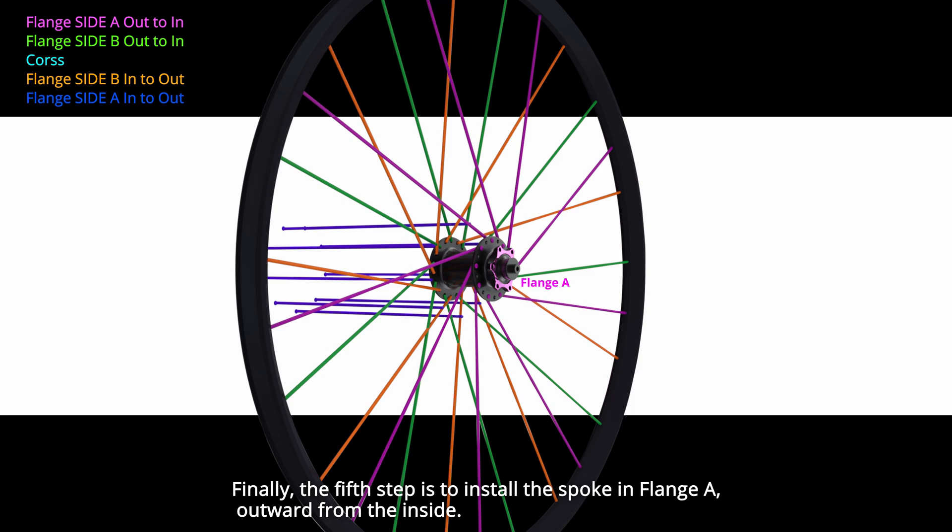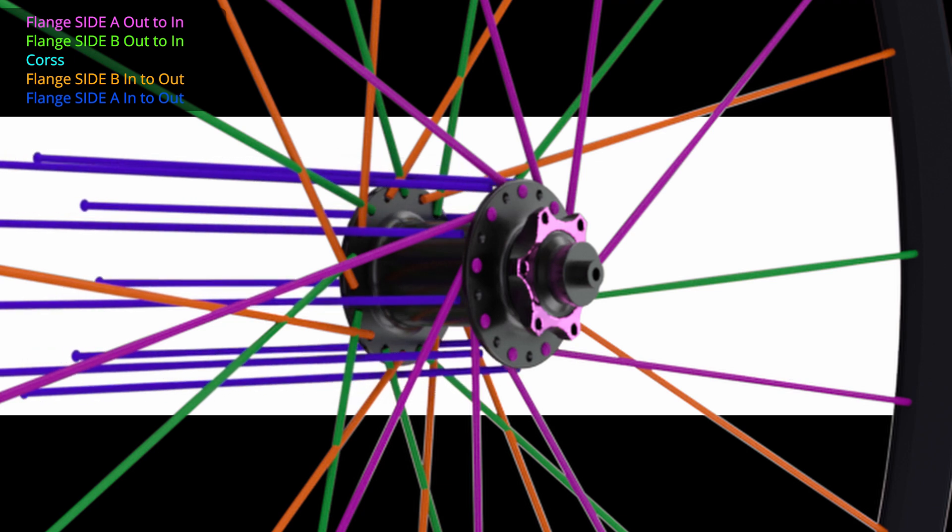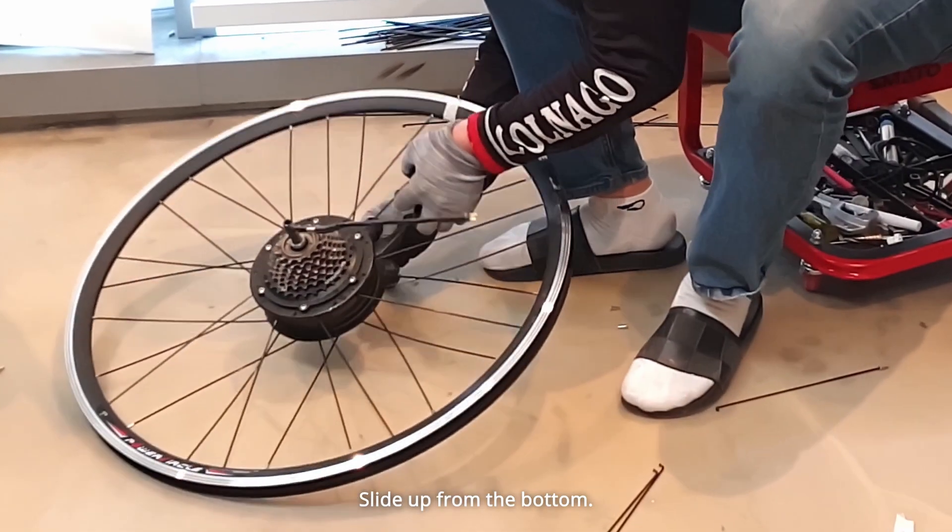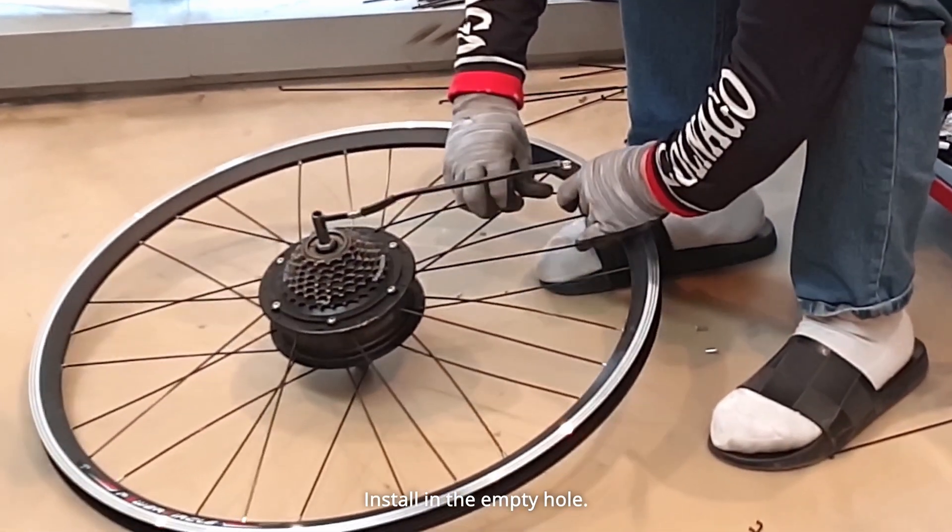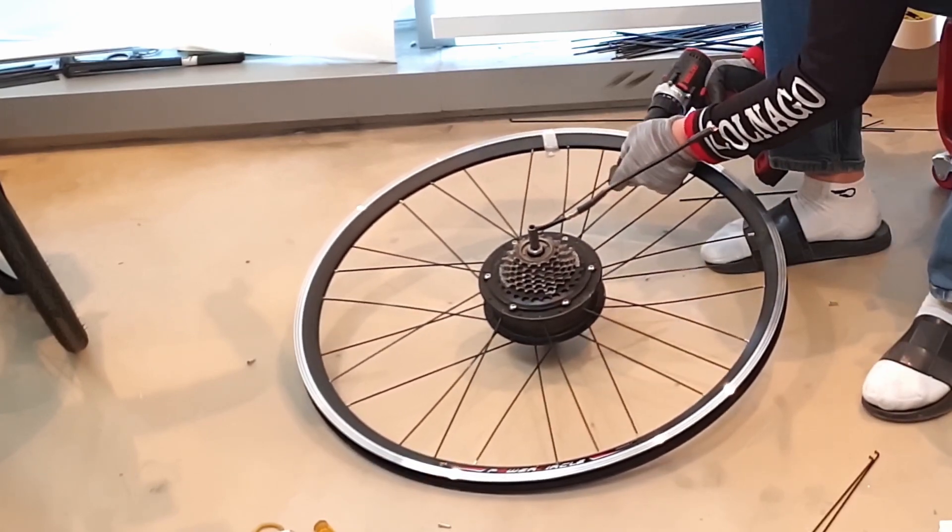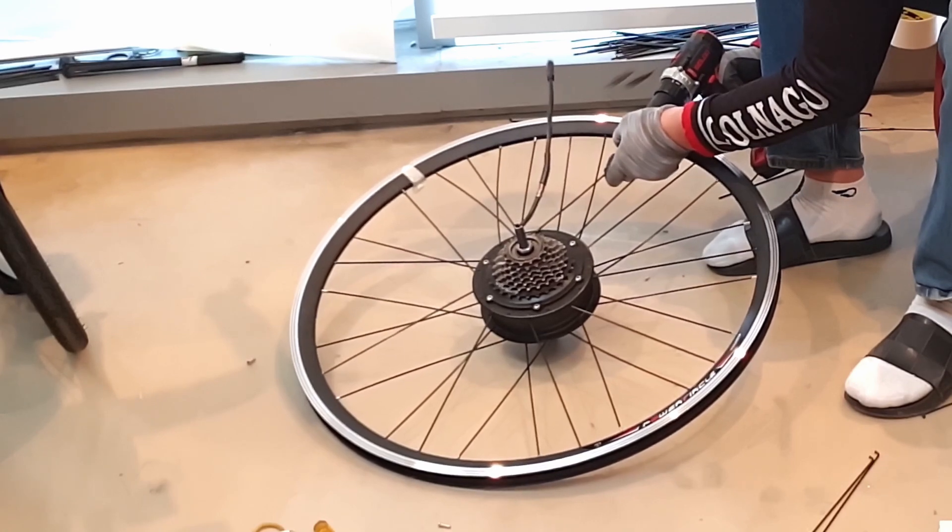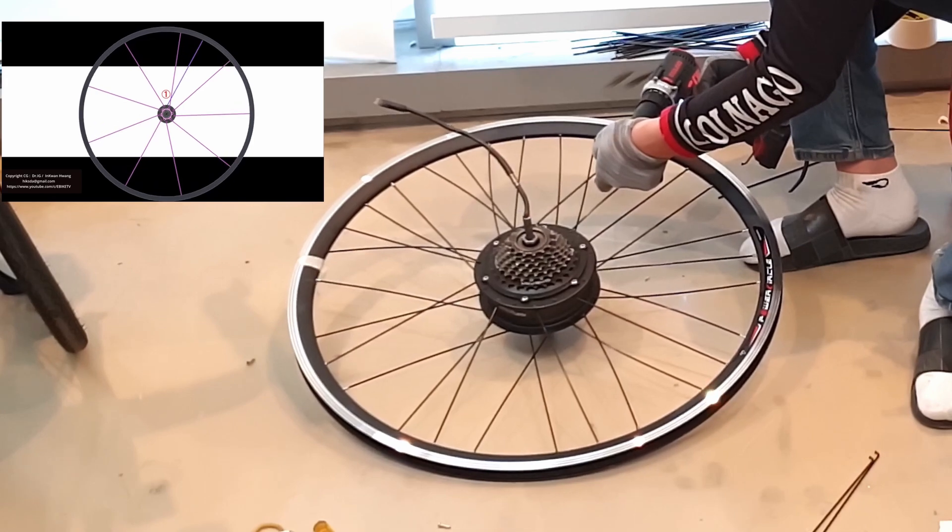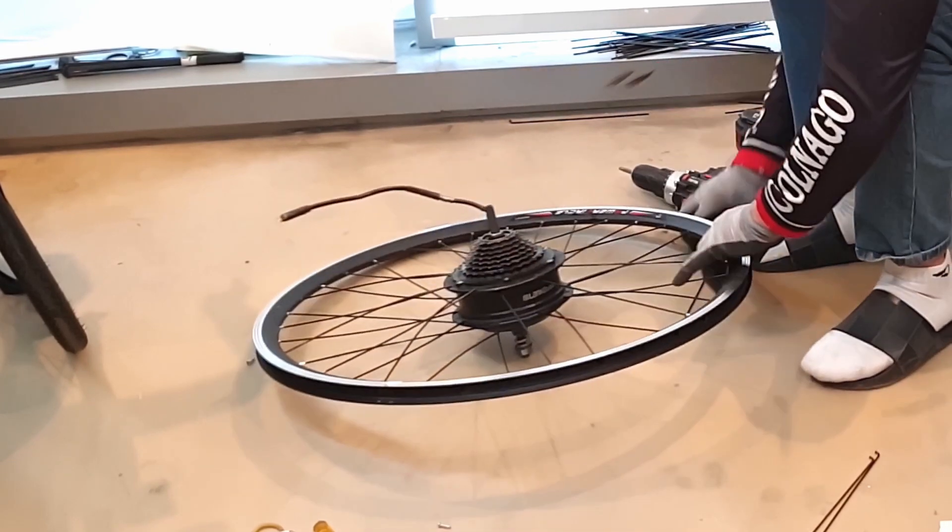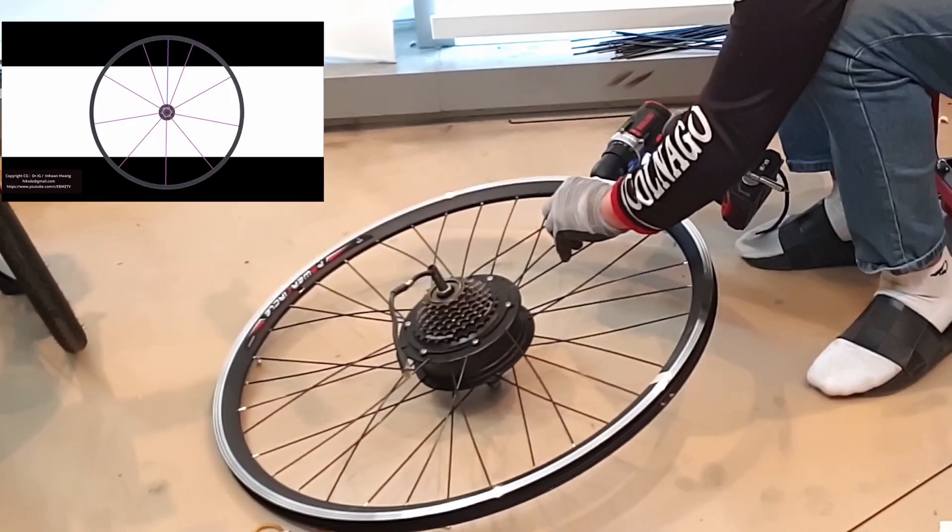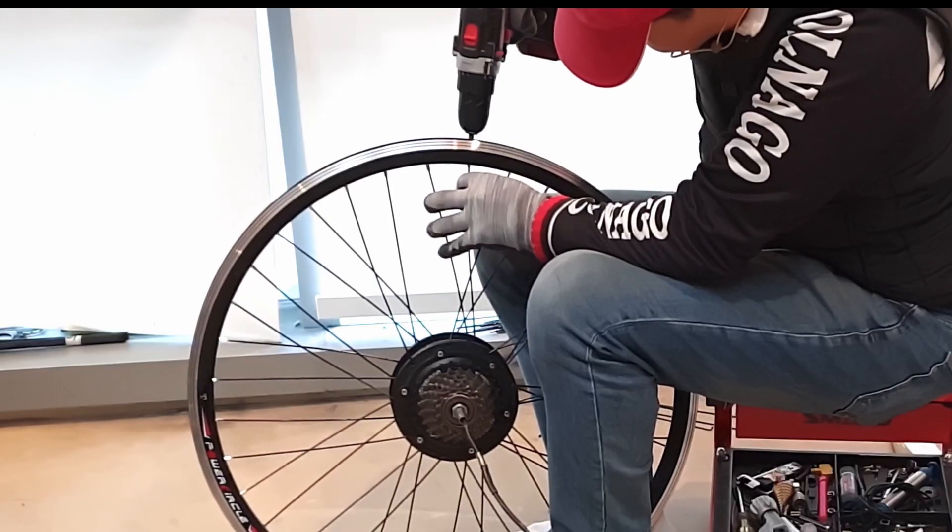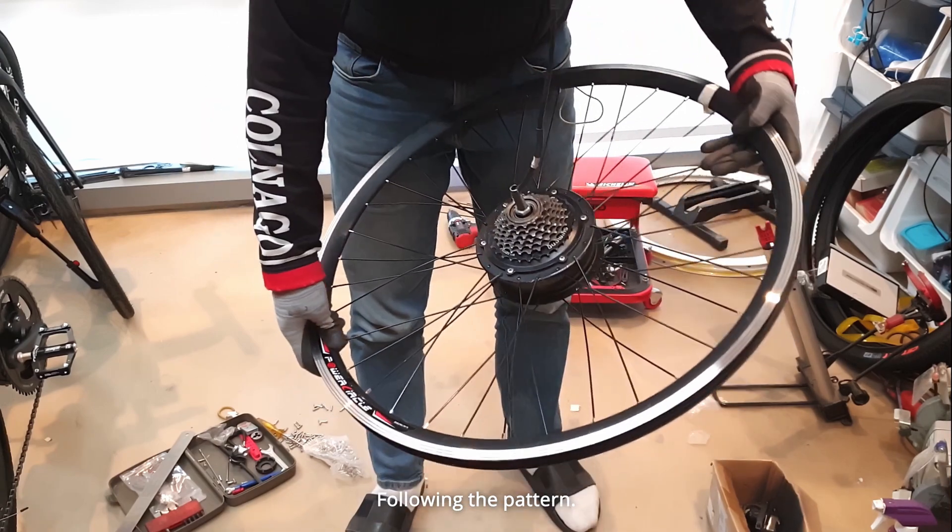Finally, the fifth step is to install the spoke in flange A outward from the inside. Slide up from the bottom, install in the empty hole, overlap while crossing the spokes here. Stay tuned! Following the pattern, one cross looks good.